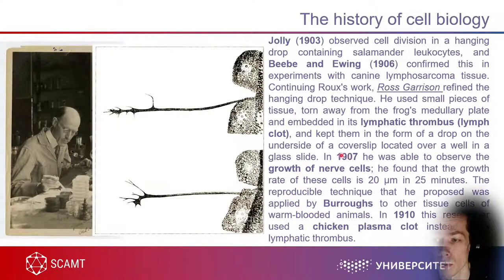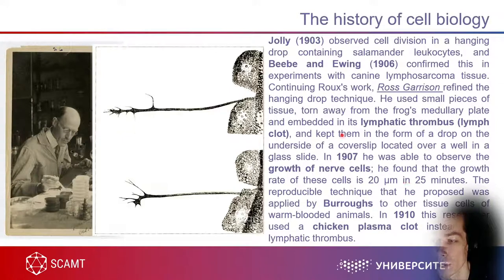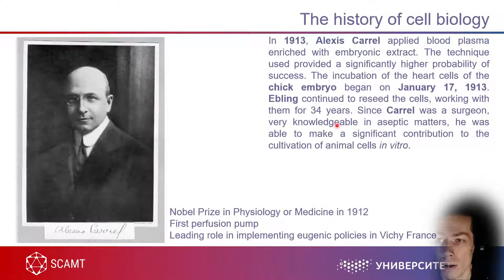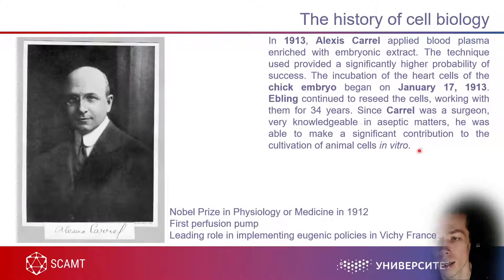In 1907, Ross Harrison observed the growth of nerve cells. Here is a picture — already a century old — showing a very nice drawing of nerve cell growth at the rate of about one micron per minute, which is very fast for a cell. A lot of contributions to the history of cell biology were also made by Alexis Carrel, again in 1913.